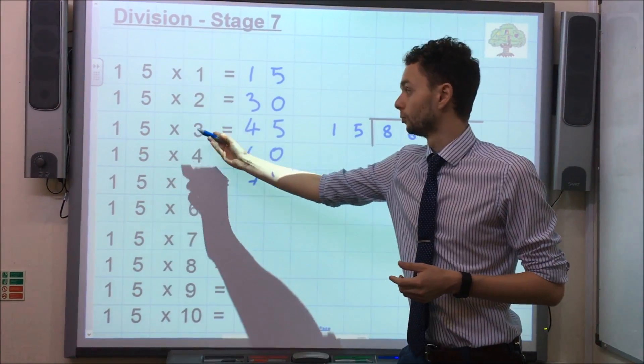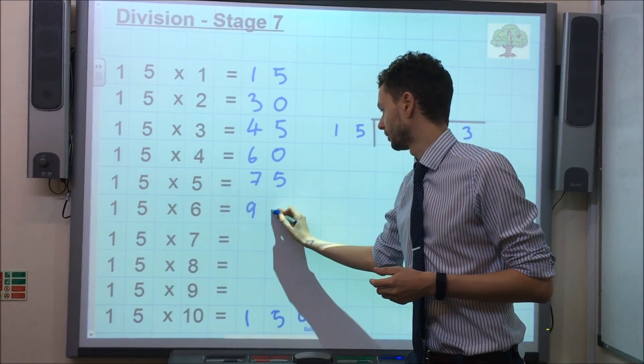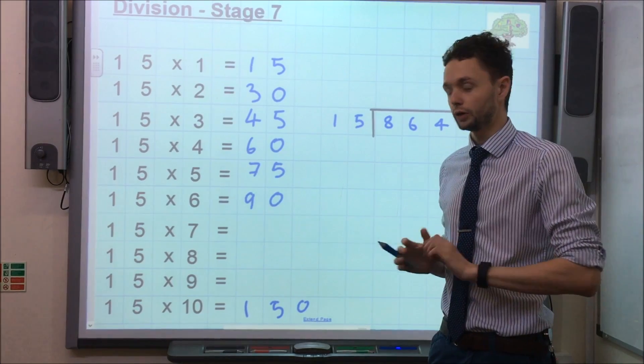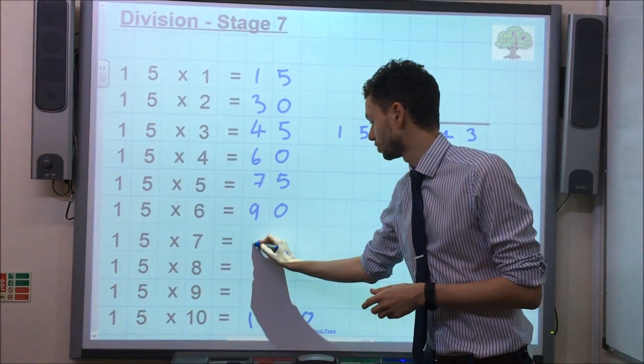15 times by 6, we just double 15 times by 3, double 45, which gives us 90. 15 times by 7, no little double and halving trick for this one, we've just got to add 15 onto 90, which gives us 105.